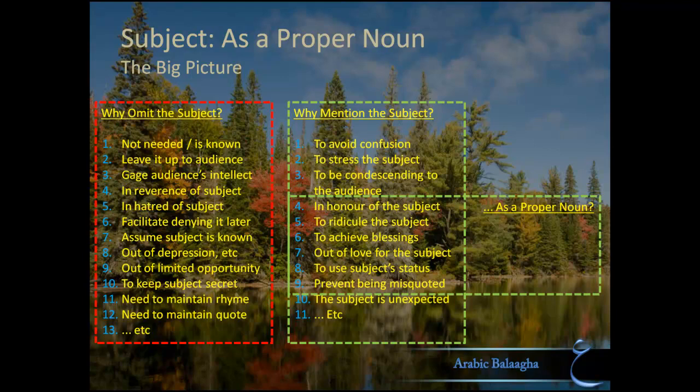Notice that a few of the reasons for especially mentioning the subject will come up again — notice the overlap in the diagram. For example, one of the reasons for mentioning the subject was to be explicit and avoid being misquoted later, and in today's lesson, we're going to learn that one benefit of expressing the subject as a name is to, again, be explicit and avoid confusion.